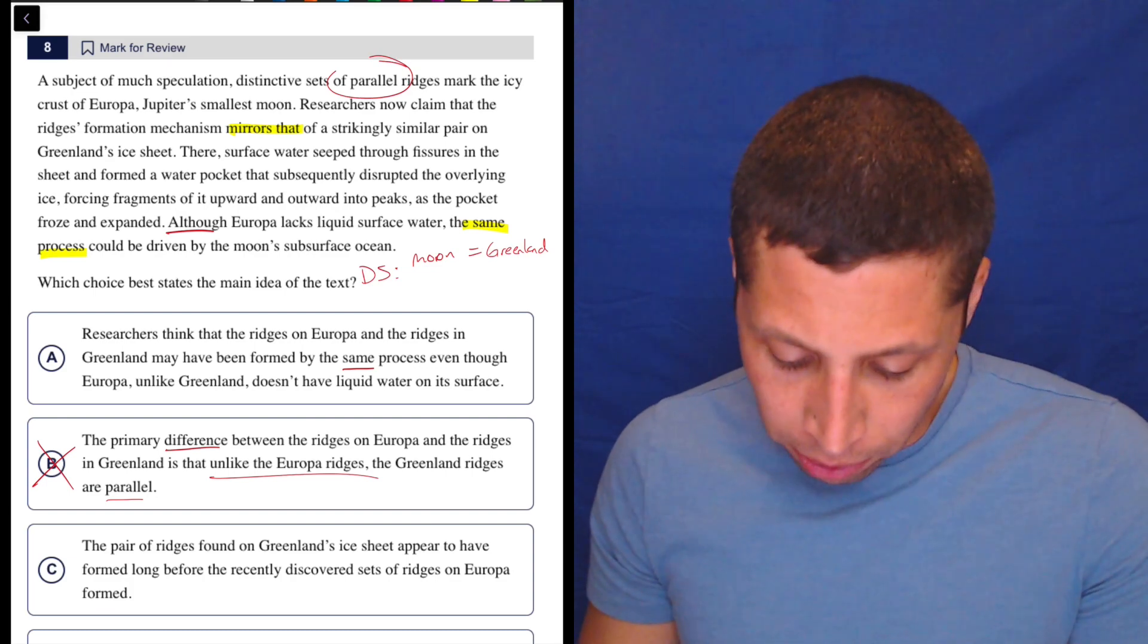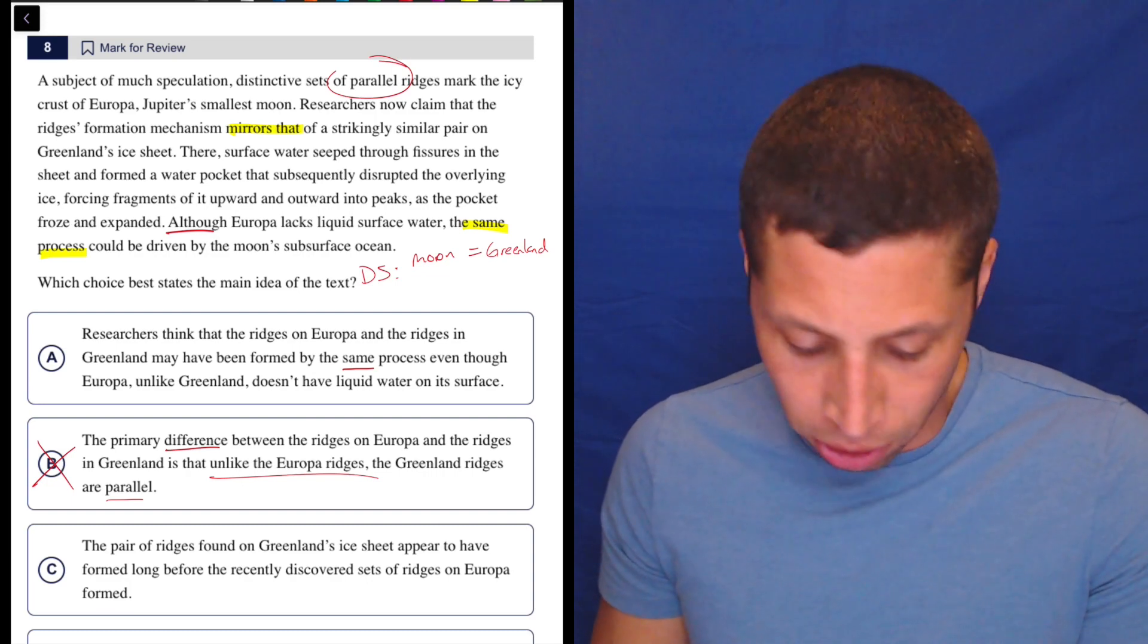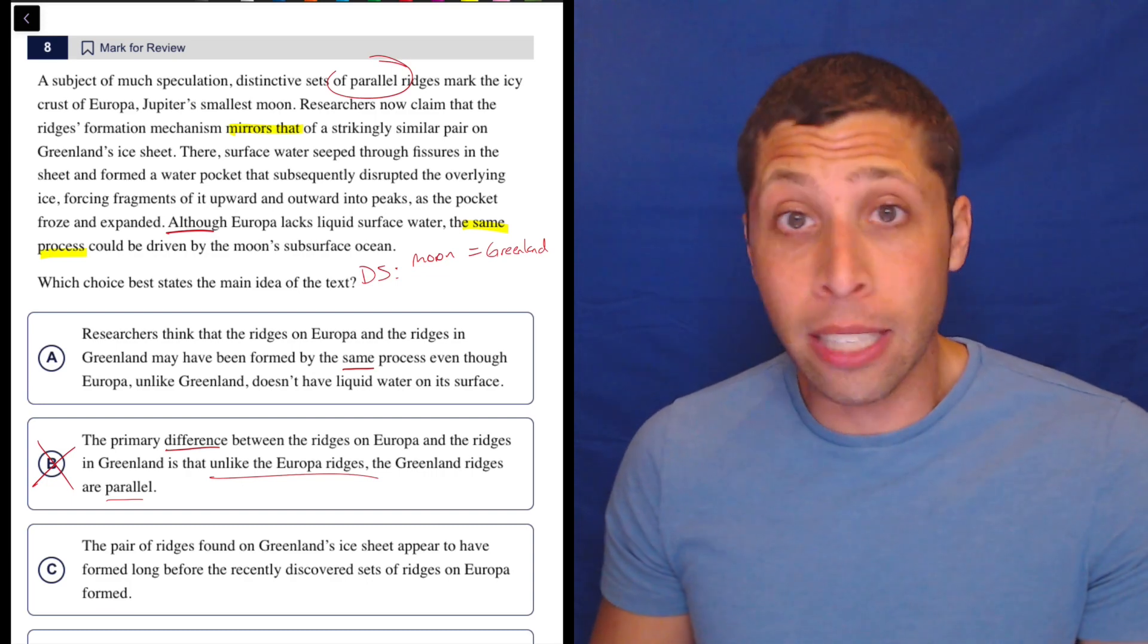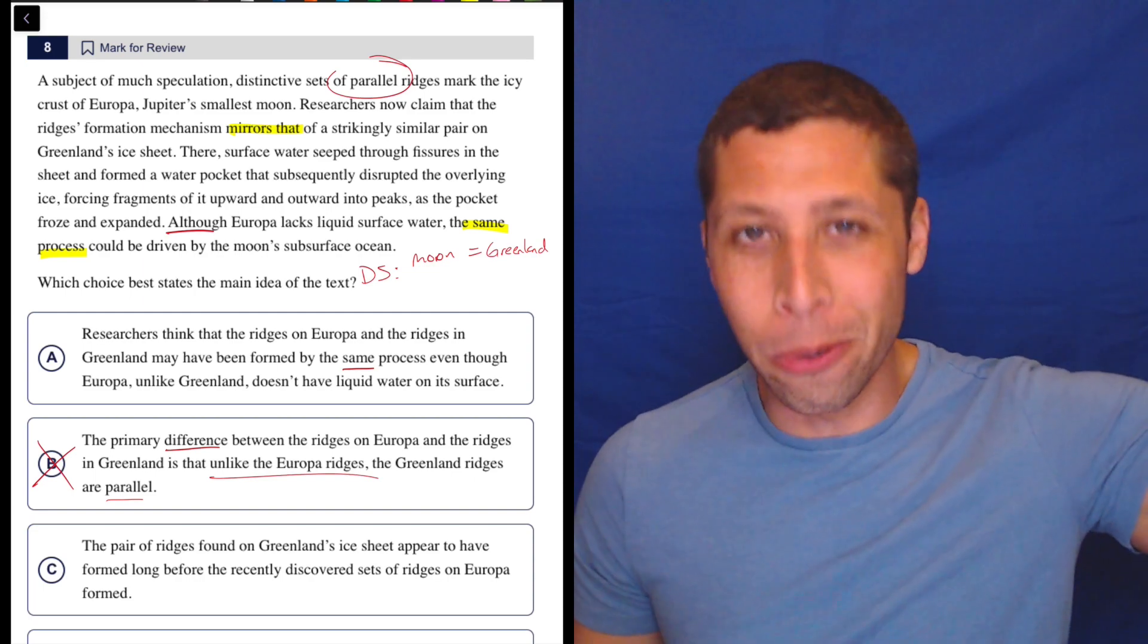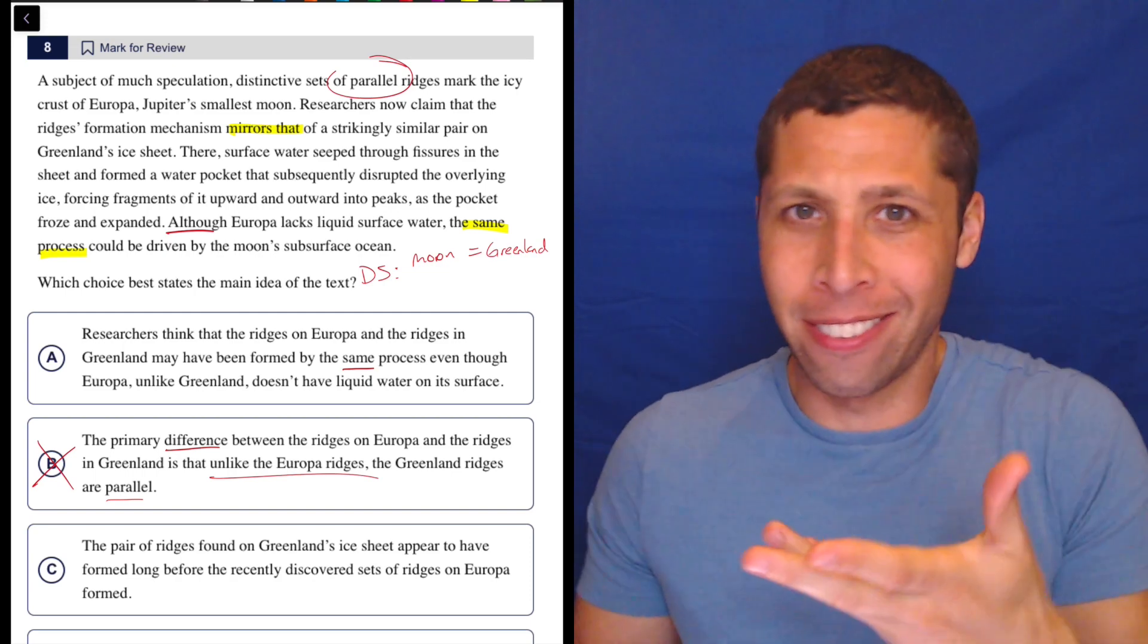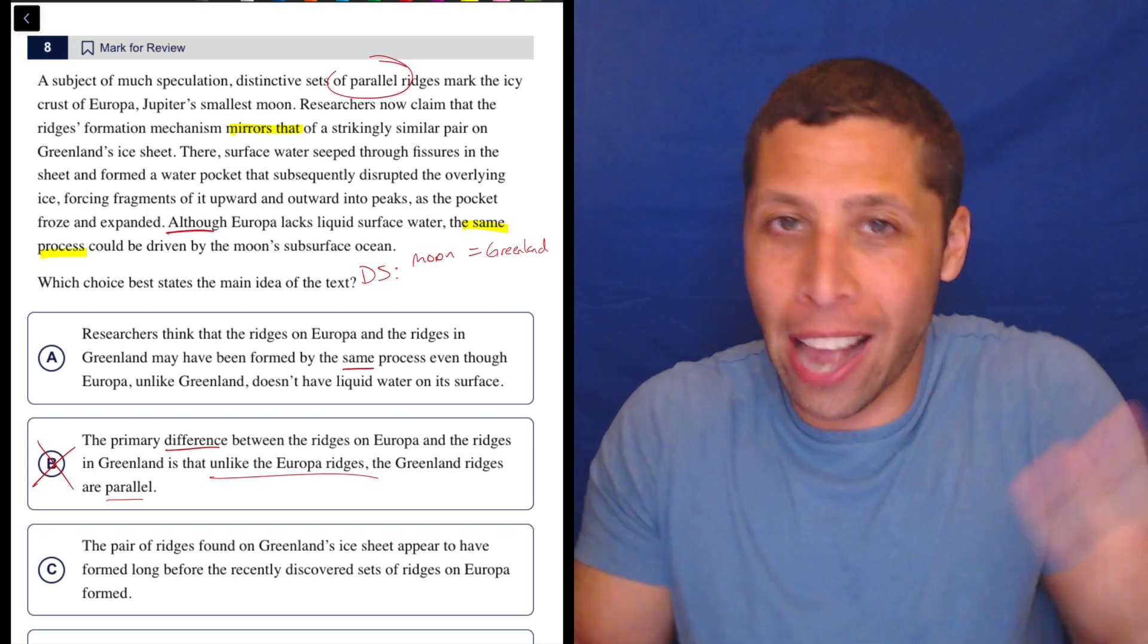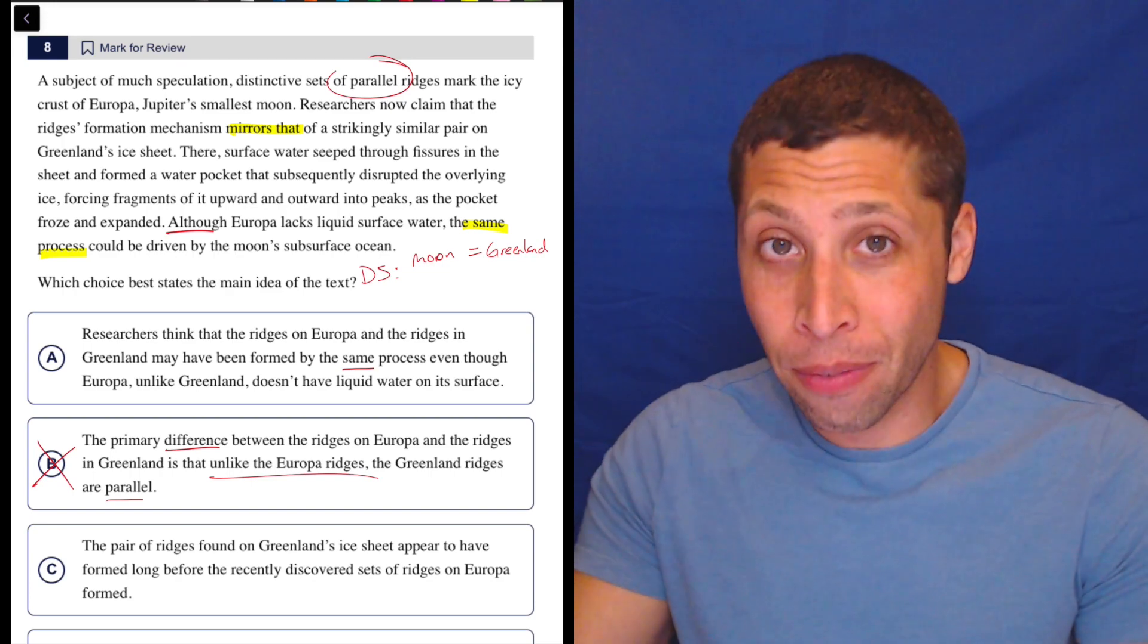See, the pair of ridges found on Greenland's ice sheet appeared to have formed long before the recently discovered sets of ridges on Europa formed. Now that sounds like a difference to me. Again, maybe it's true. A faraway moon might have a much longer time span than Greenland, but I don't know. In fact, I don't really care because they never really brought up the time frame of anything. So that's a very common trap.